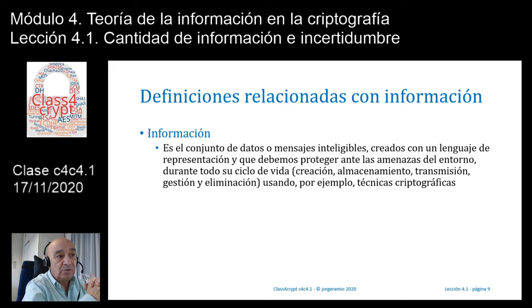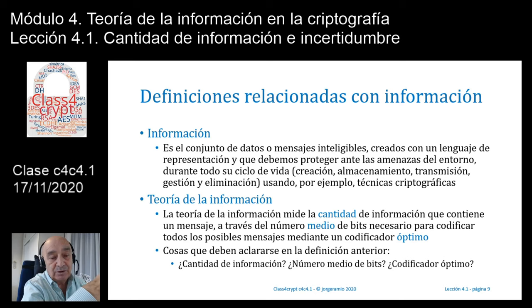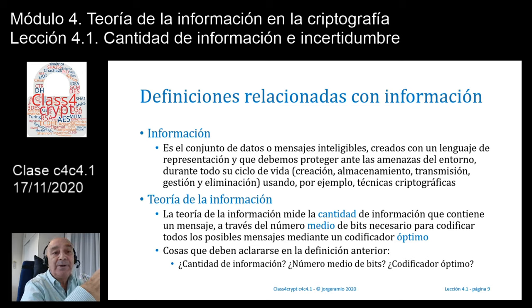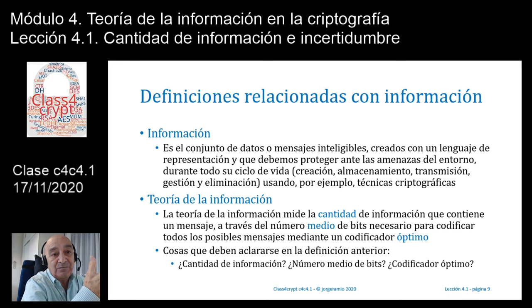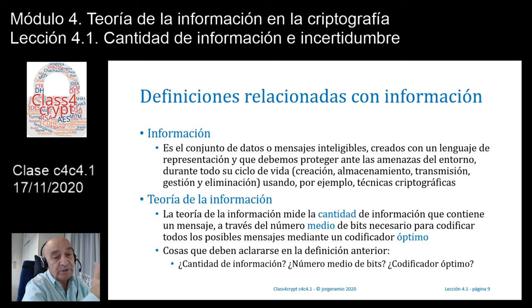Una vez que conocemos lo que podemos entender por información, deberíamos definir qué es la teoría de la información, lo que estudió Claude Shannon. La teoría de la información mide la cantidad de información que contiene un mensaje a través de un número medio de bits necesarios para codificar todos los posibles mensajes mediante un codificador óptimo. En esta diapositiva he destacado en color celeste algunas cosas clave: qué es cantidad de información, qué significa el número medio de bits, y qué es un codificador óptimo. Conocemos el código ASCII con sus 256 caracteres, es decir, un byte formado por 8 bits, con 2 elevado a 8 igual a 256 representaciones.